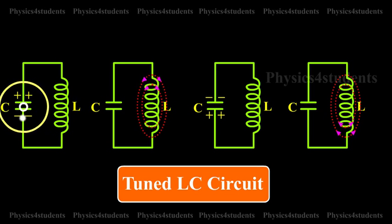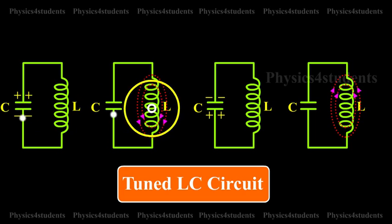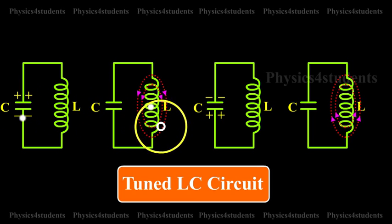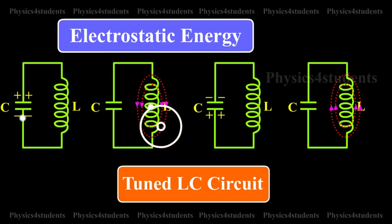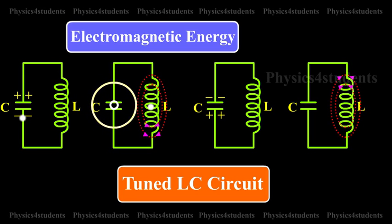When the charged capacitor is connected to inductance L, the capacitor will discharge, sending current through L and creating an induced magnetic field as shown in the animation. Thus, the electrostatic energy stored in the capacitor has been converted into electromagnetic energy associated with inductance L.